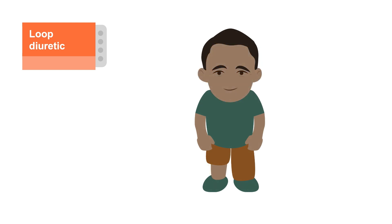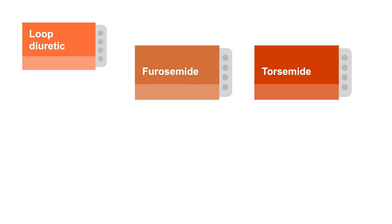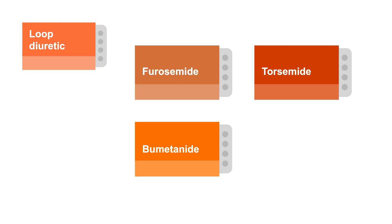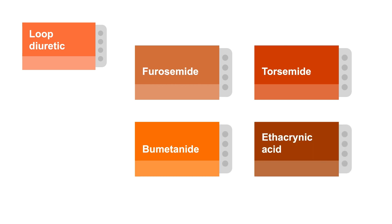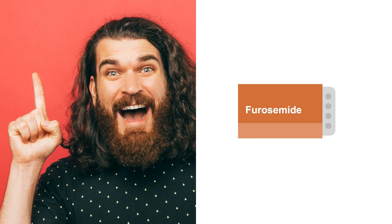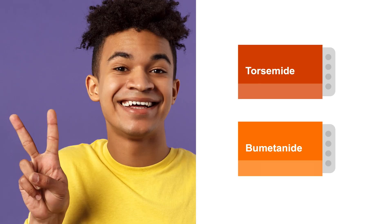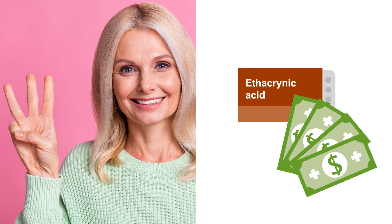Loop diuretics include furosemide, torsemide, bumetanide, and ethacrynic acid. Oral furosemide is usually the first choice. Oral torsemide or bumetanide often work for patients who don't respond well to furosemide. Ethacrynic acid is expensive, so it's reserved for patients with an allergy to the other agents.